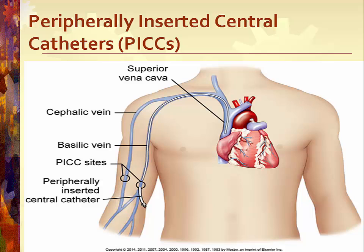If a patient has a PICC, do not use that arm for blood pressures or blood draws. The advantages of a PICC over a central venous catheter include a lower infection rate, fewer insertion-related complications, decreased costs, and it can be inserted at the bedside or in an outpatient area. Complications usually include catheter occlusion and phlebitis. If phlebitis occurs, it usually appears within seven to ten days following insertion.